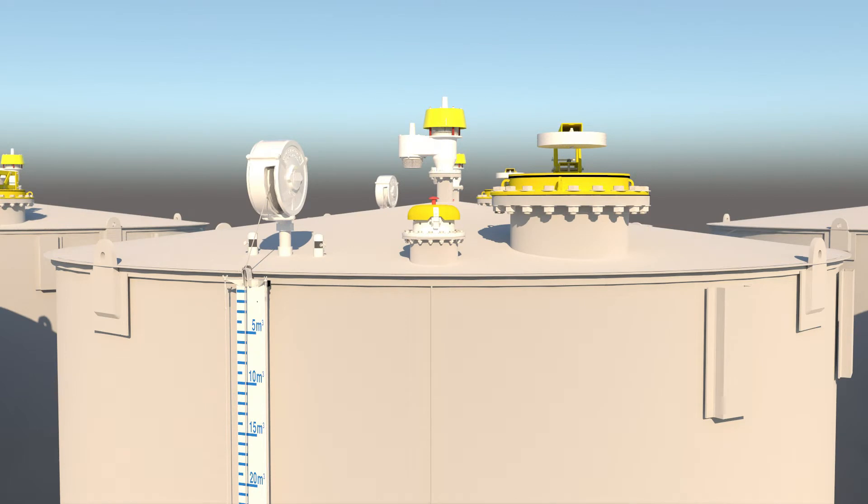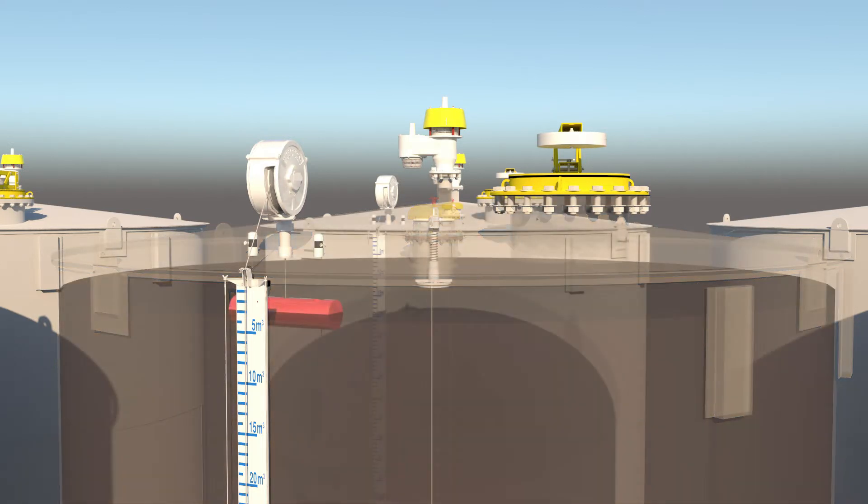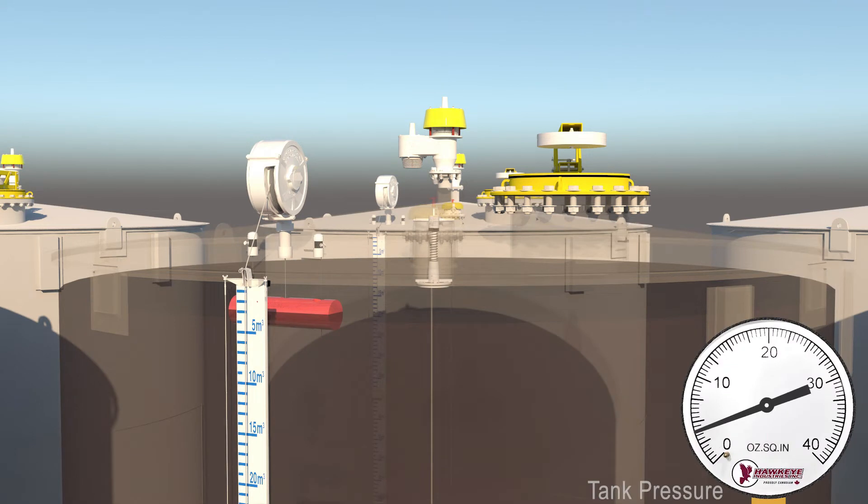To demonstrate the use of the Series 4000 Marsh Hawk, consider this typical above-ground storage tank equipped with a full line of Hawkeye vapor control products. The tank starts with 4 ounces per square inch of pressure and experiences anticipated fluid movement.